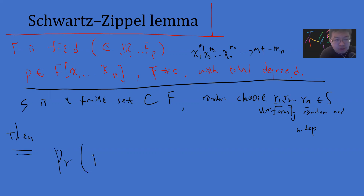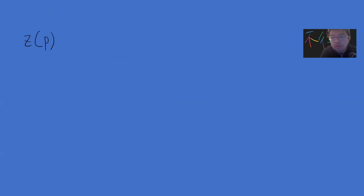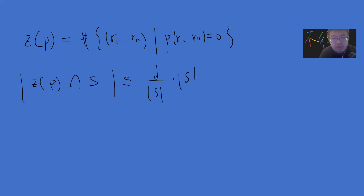The theorem states: the probability that P(r1, r2, ..., rn) = 0 is at most d divided by |S|. Equivalently, if you consider the zero set Z(P) — all tuples (r1,...,rn) where P evaluates to zero — then the intersection of Z(P) with S^n has size at most d/|S| * |S|^n, which equals d * |S|^(n-1).